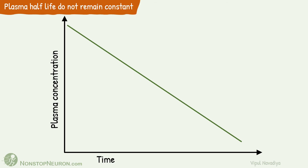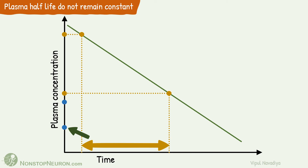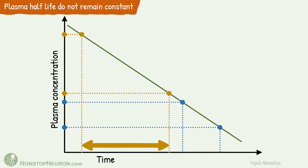Now, the final point: plasma half-life is not constant in zero-order elimination kinetics. Let's compare half-lives for two different points to understand this. From one point, half concentration is at a certain level, and the time required for a 50% fall in that concentration is longer. From a lower level, half concentration is less, and the time required for a 50% fall is shorter. For different concentrations, plasma half-life is different. Thus, plasma half-life is not constant in zero-order elimination kinetics.